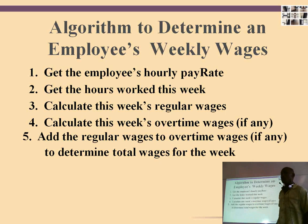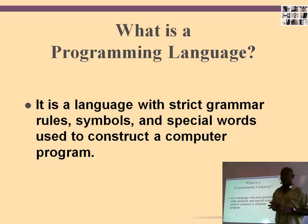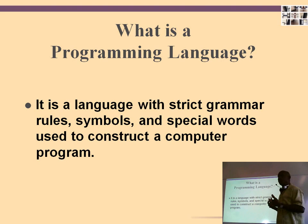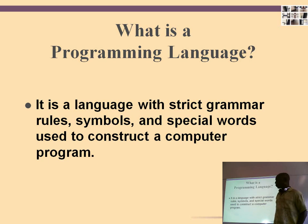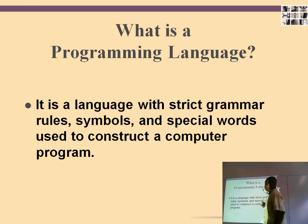Switching directions for a moment, let's talk about a programming language. A programming language has very much the same formal structure as English — it's a language to communicate with a computer or piece of hardware. It has strict grammar rules, symbols, and special words used to construct a computer program. Just as in English, every sentence must have a noun and a verb, punctuation at the end — those are grammatical rules — and specific words with specific meaning to construct a sentence or, in this case, even a lecture.